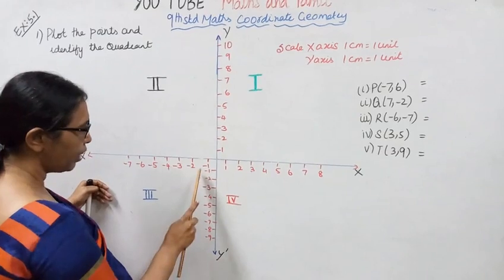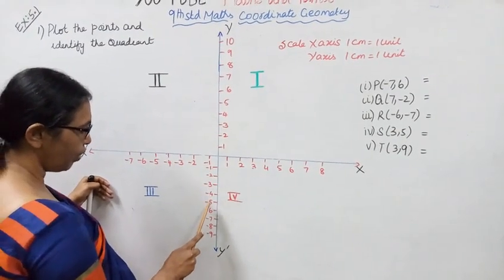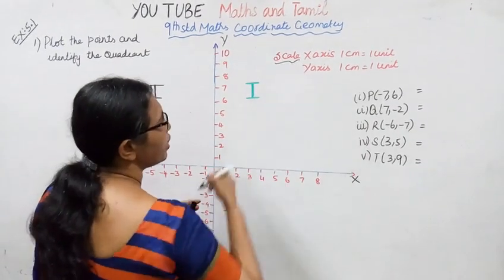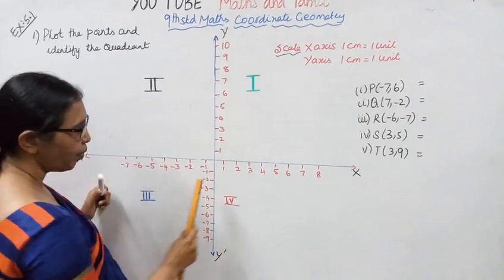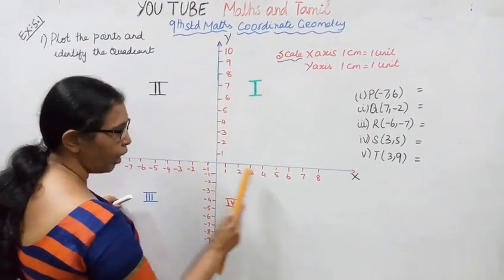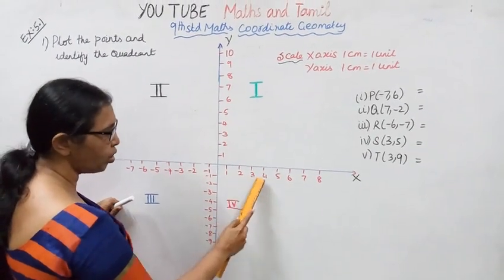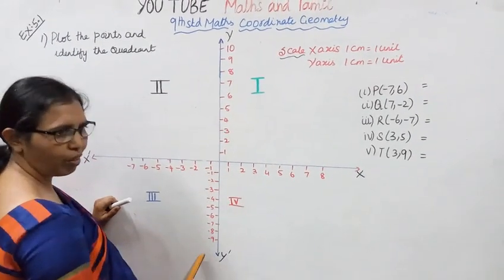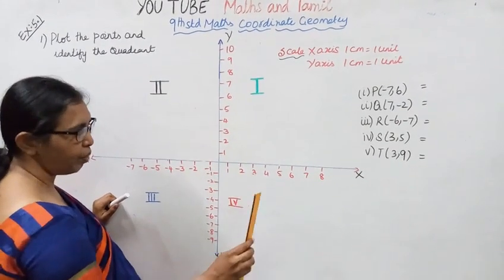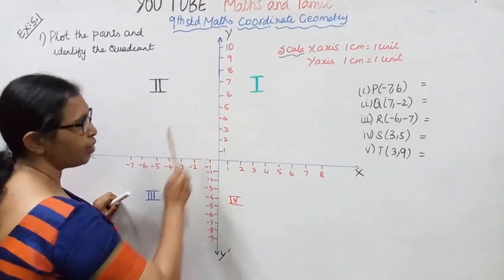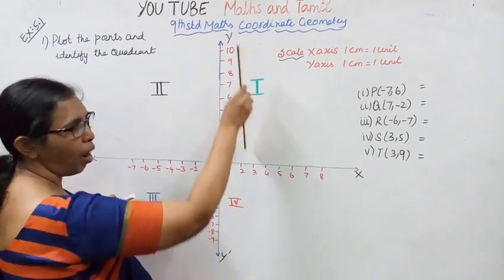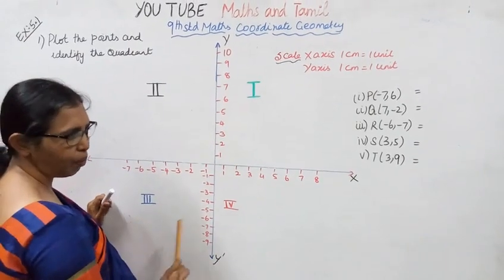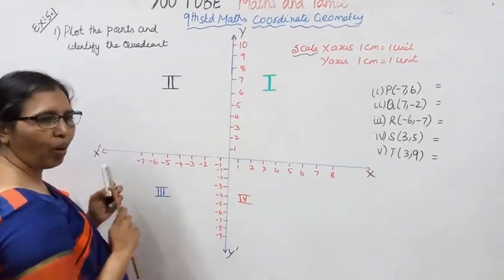On the graph, X-axis one centimeter equals one unit. Right is positive, left is negative, up is positive, down is negative. Check the portal — the graph has four quadrants in each corner.